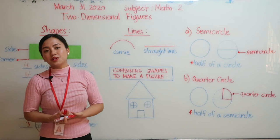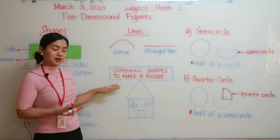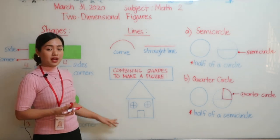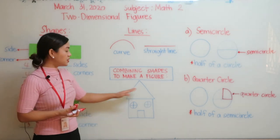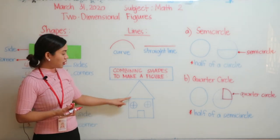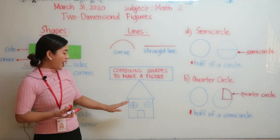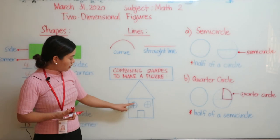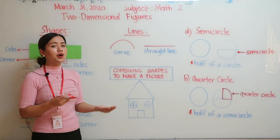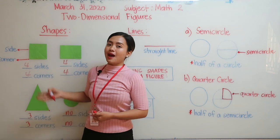We can also combine shapes to make a figure. For example, I drew a house here. As you can see, there are a lot of shapes combined — we have a triangle, a rectangle, a square, and quarter circles. So we can form any figure using the basic shapes we have.